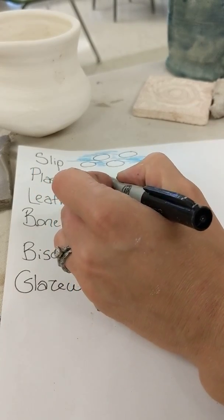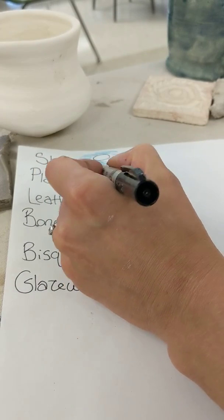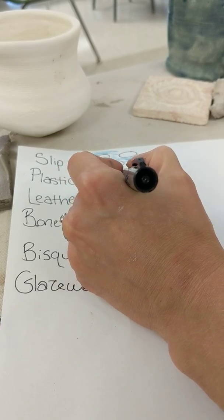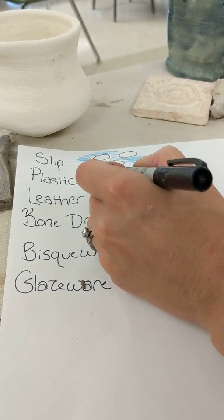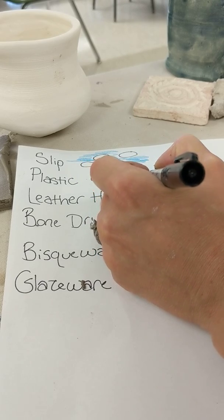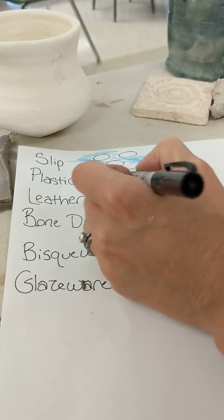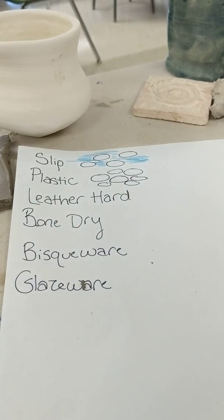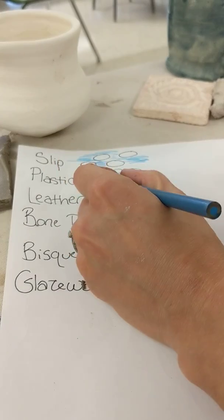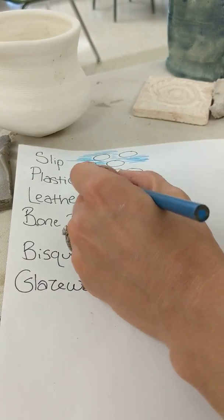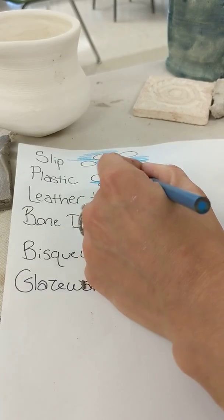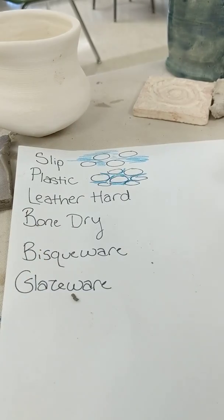With plastic clay on the molecular level, all of a sudden we see that those molecules are a lot closer together. We still see those little spaces in between, so there's still water that can float through each of them, but it's much less water than before. Plastic clay is what you start with when you're making things out of clay.